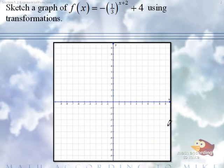Sketch a graph of f of x equals negative quantity one-third to the x plus two plus four using transformations.